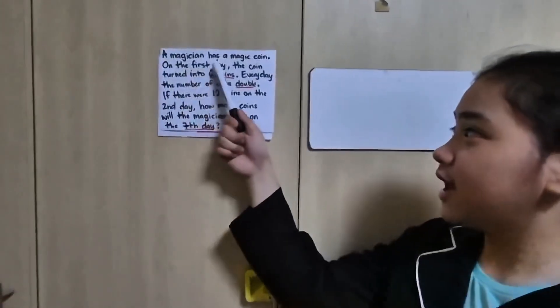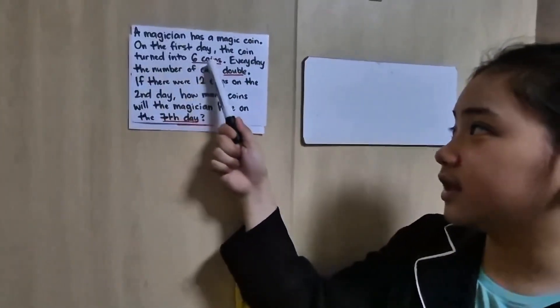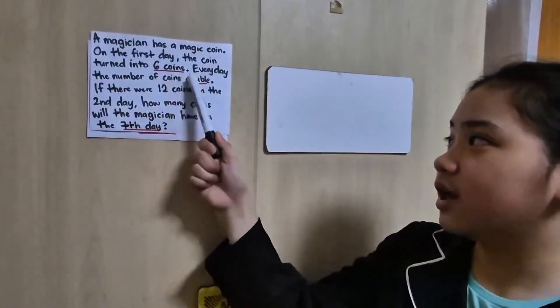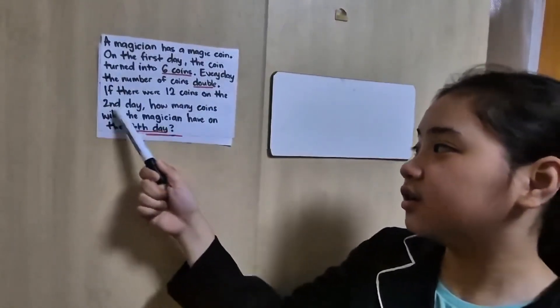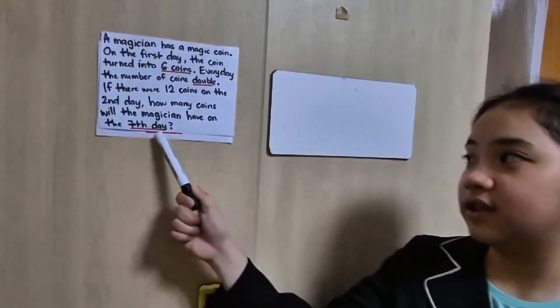Good day! My name is Brian Troy R. Lioran and my name is Charlize Margot S. Quezon, and we will be teaching you about geometric sequence. But wait — what is geometric sequence? Well, a geometric sequence is a list of numbers where each term is found by multiplying the previous one by the same number. So in this problem, a magician has a magic coin. On the first day, the coin turned into 6 coins. Every day the number of coins doubled. If there were 12 coins on the second day, how many coins will the magician have on the seventh day?